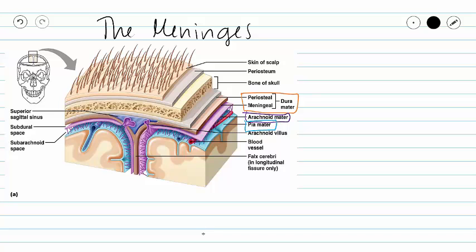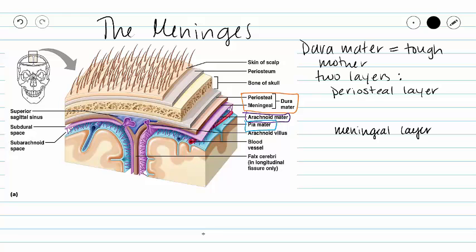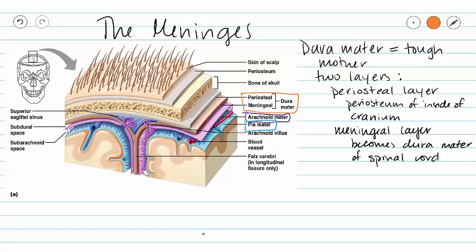We're going to begin by taking a look at our dura mater, which means 'tough mother.' We have two layers of dura mater. The outermost layer is called the periosteal layer, which acts as the periosteum for the inside of our cranial bones. The periosteal layer is tightly connected to a meningeal layer, and the meningeal layer will become the dura mater of the spinal cord. In most instances, our meningeal layer bumps right up against the periosteal layer.